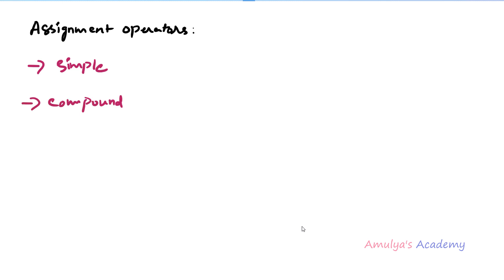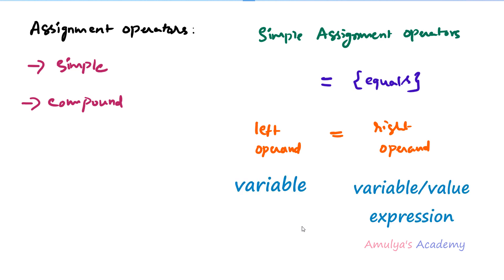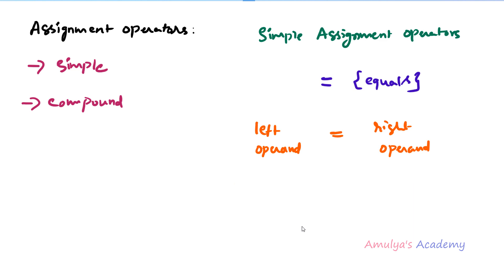First we will talk about simple assignment operators. In the simple assignment operator we use the equals operator. This is the most used assignment operator and it works with two operands. We write it as: left operand equals right operand, where the left operand is a variable and the right operand can be a value or a variable containing some value, and we are assigning the right operand to the left operand.